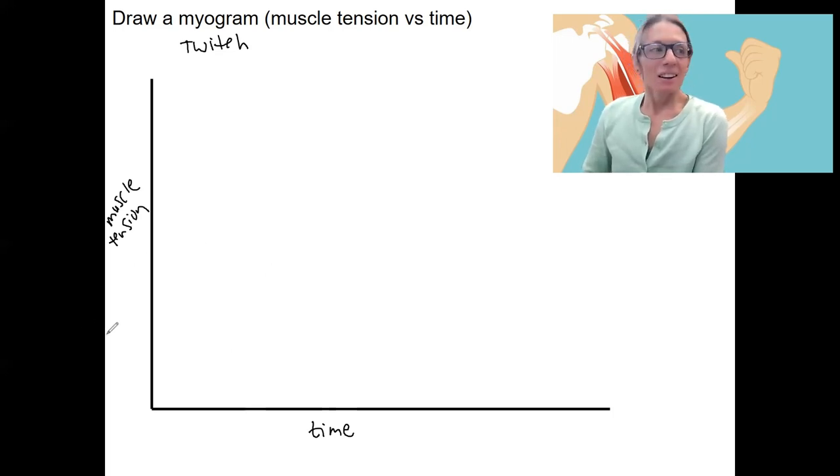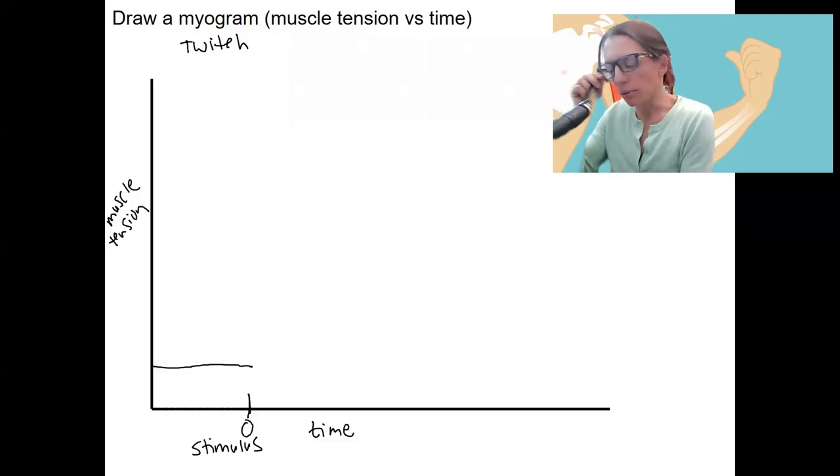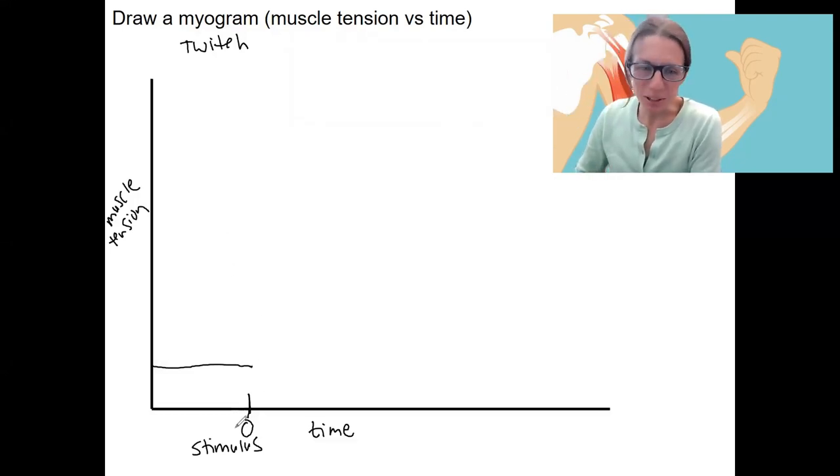So a single twitch, we are going to have some baseline amount of tension here. And let's say here is time zero. Doesn't matter what we call that. This could be minus one. This could be time one, but this is where a stimulus occurs. So if this was in a lab setting, it could be actually like firing electrical stimulation to cause a nerve to fire. Here's the stimulus time zero.